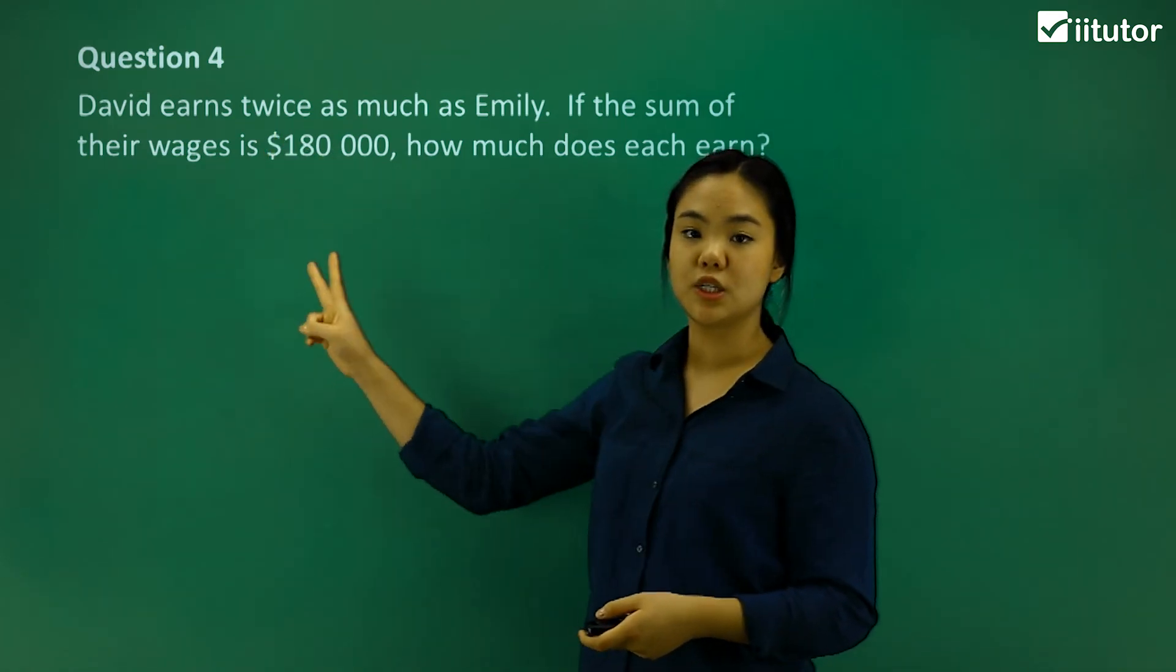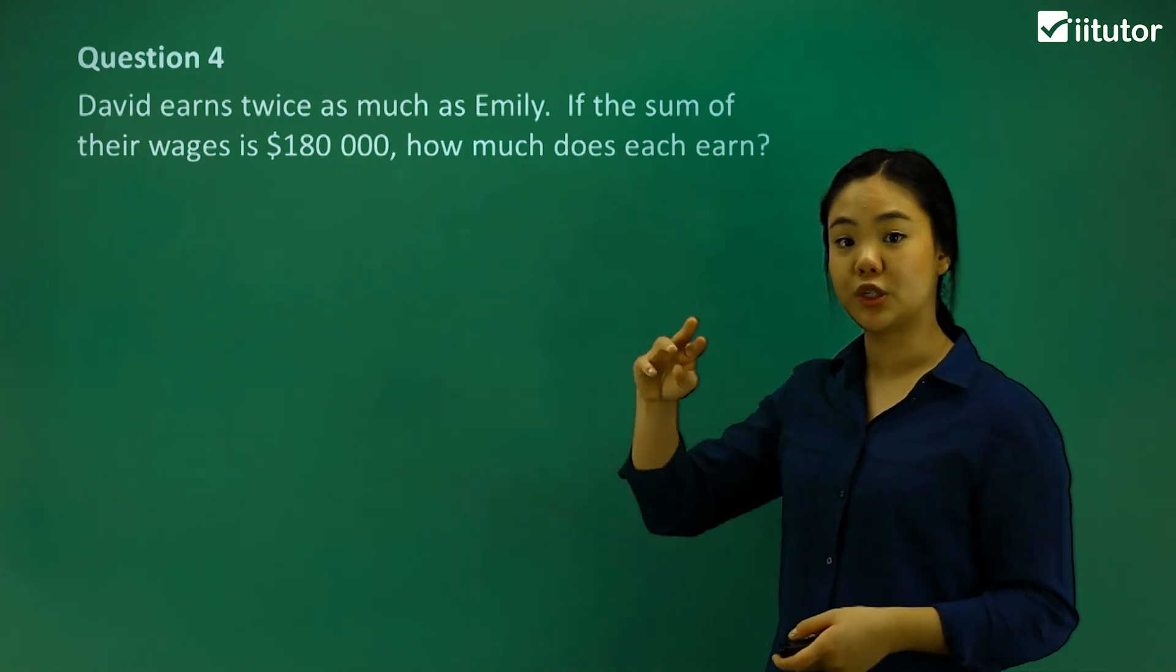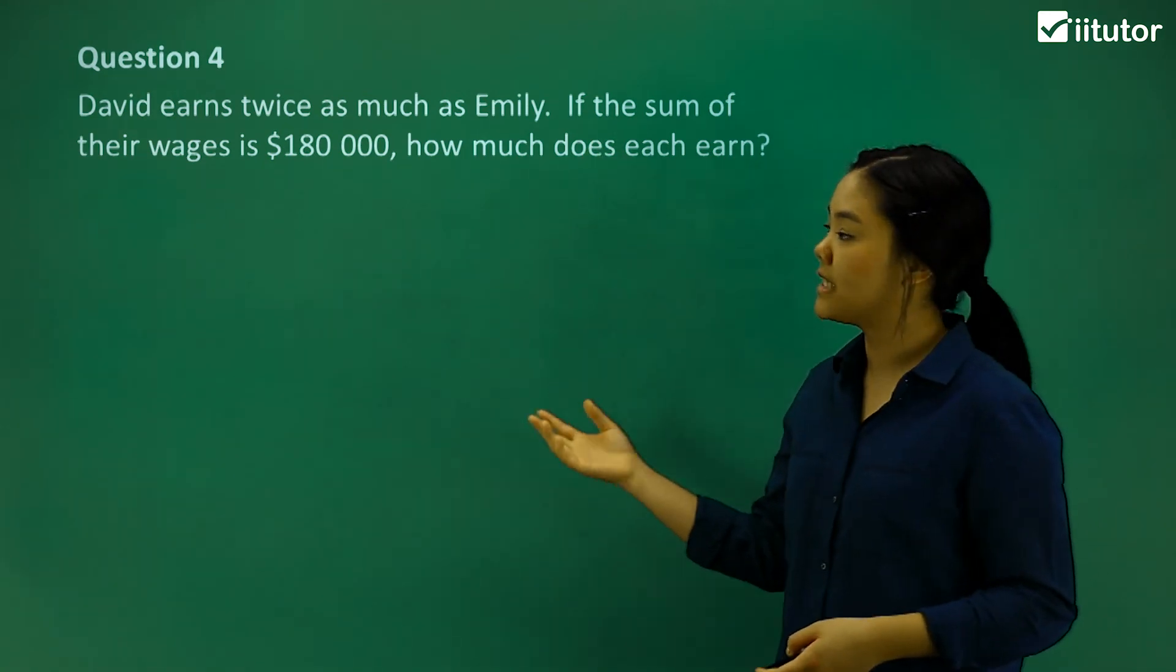So we want to know what the ratio is. David earns twice, 2, as much as Emily, which is 1. So 2 to 1. Okay? So for David,